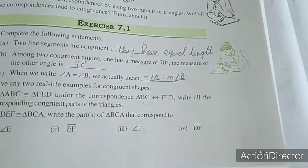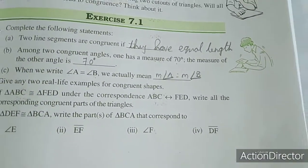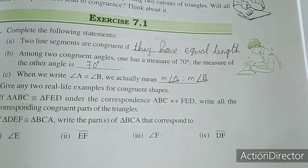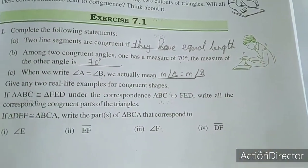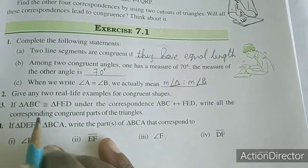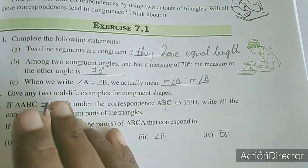Problem 2: Give any two real life examples of congruent shapes. One example is one rupee coins. Problem 3: If triangles are congruent, first triangle congruency.